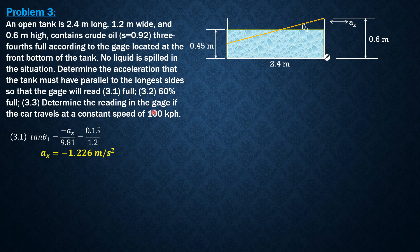For the second part, so that it reads 60% full—remember if the depth is 0.45 meters initially it is 75% full—for the reading to be 60% full, the crude oil surface should look like as shown.